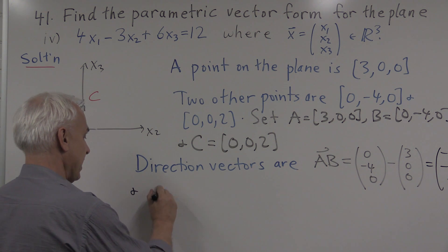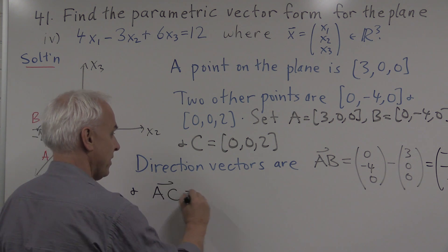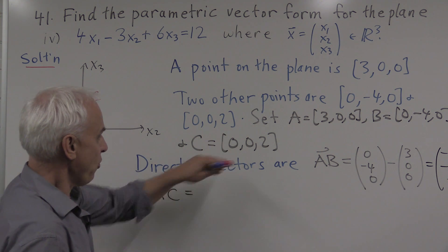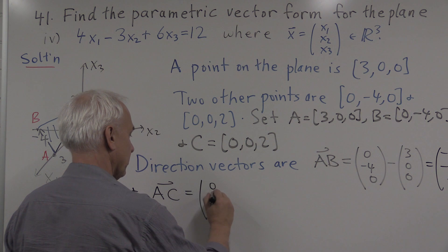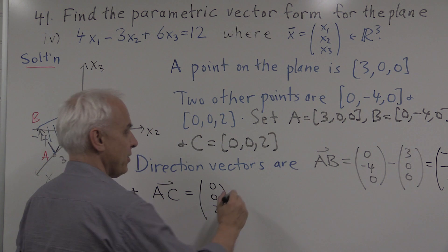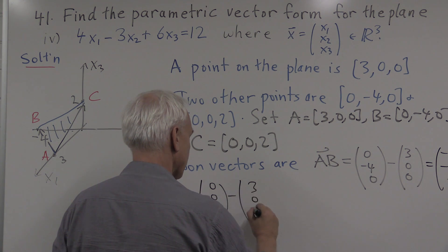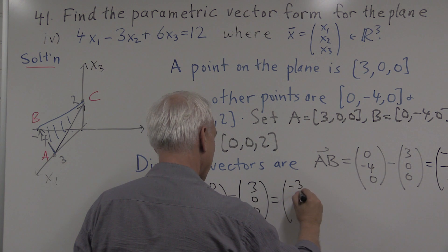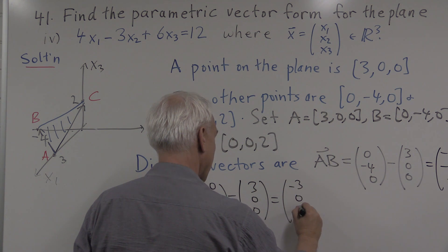And another one is AC. And that's obtained by taking the coordinate vector of C, which is zero, zero, two, and subtracting the coordinate vector for A, which is three, zero, zero. For a total of minus three, zero, and two.